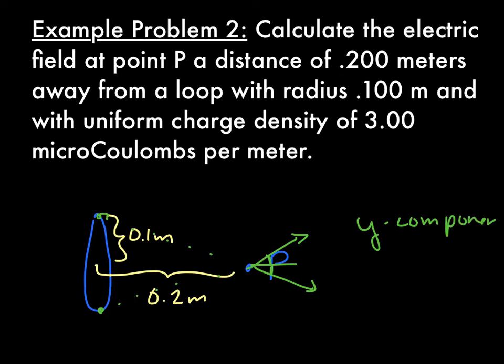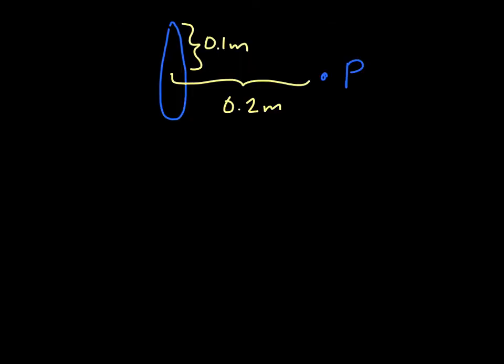So the only thing we care about is the x component. So we're going to say that Ex, which is the field at P, which is the only thing we care about, equals E times your cosine of theta. Where this angle right here is theta, which happens to be this angle. So let's look at a couple more symmetries that we can exploit.